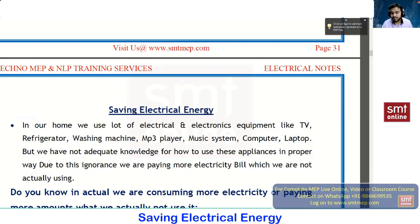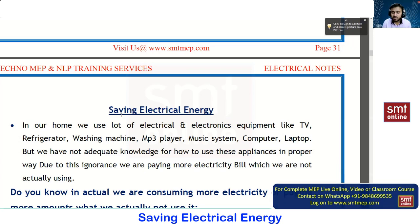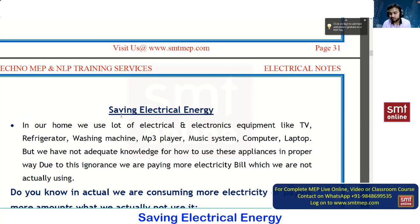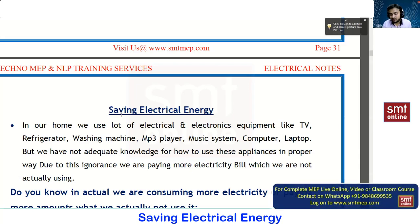We are going to understand how to save electrical energy, because many of us don't know how to minimize the consumption of electric energy. Almost across the globe, because of different changes in environmental conditions and global warming, there is a much difference in the environment — even in summer season we are getting rain, and in winter season the temperature is almost more than 30 degrees centigrade. This is happening because of change in environmental conditions, caused by burning of fossil fuels.